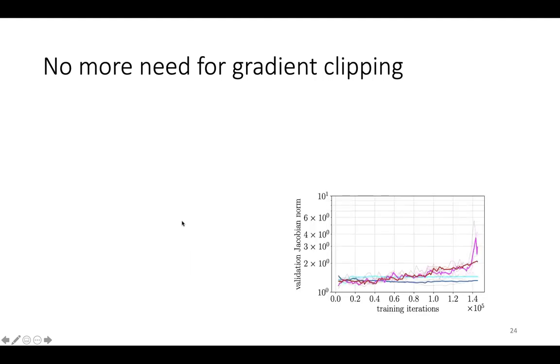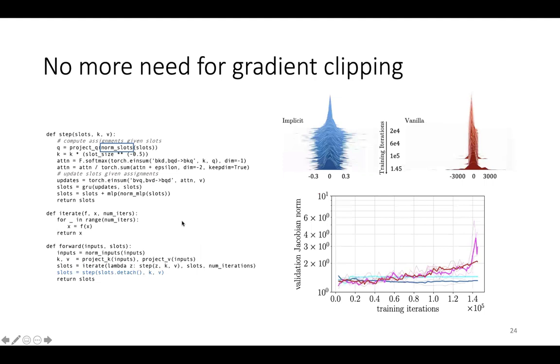In fact, without gradient clipping, the Jacobian norm for the vanilla version begins to explode as training progresses, and this is reflected in the large gradient magnitudes of the vanilla version compared to the implicit version of the layer norm on the slots.